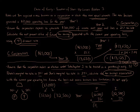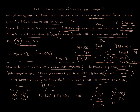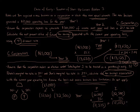We multiply each owner's $32,500 loss by their respective marginal tax rate. For Potato at 35%: $32,500 × 35% = $11,375. For Yam at 37%: $32,500 × 37% = $12,025. Adding the two together gives a total tax savings of $23,400.